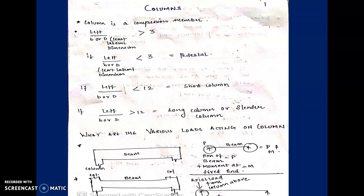The failure of a slender column will be caused by buckling. These are the definitions of columns — when to classify as a short column and when to classify as a long column — and these are under the guidelines of IS 456.